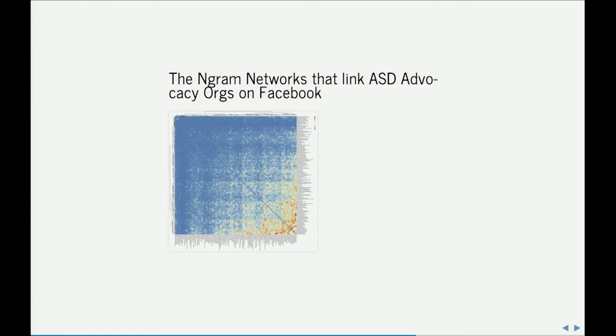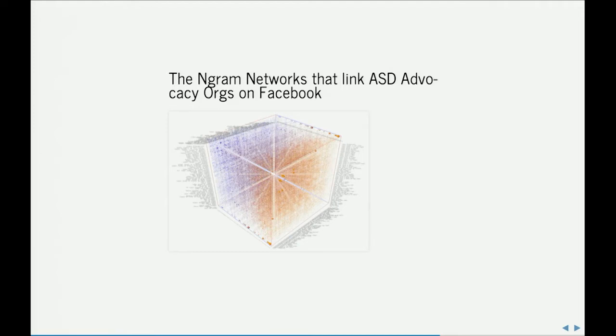We can also do this over time. Here we have a 3D adjacency matrix where time is on the z-axis, and we can see these cultural relationships evolving over time. In the context of this paper, I talk about cultural holes in meaning structures opening and closing — and how those create opportunities for organizations to broker multiple topics or themes and increase what I call the resonance of their message.